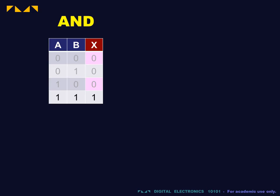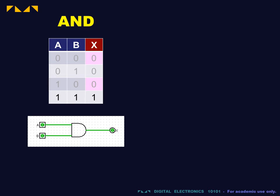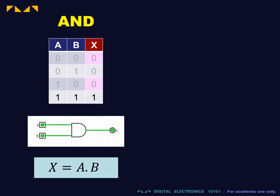The output of the AND gate is true if and only if both inputs are true. The Boolean expression reads x is equal to a AND b.